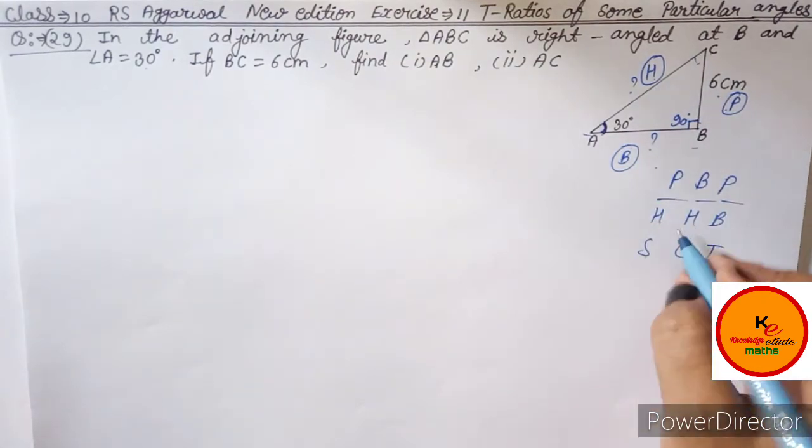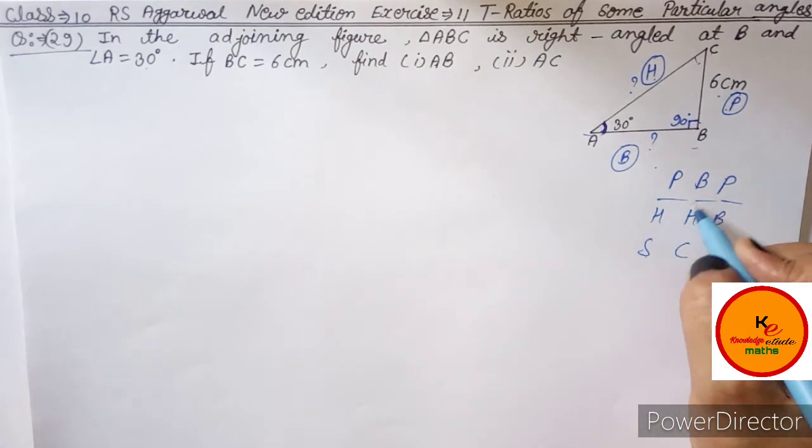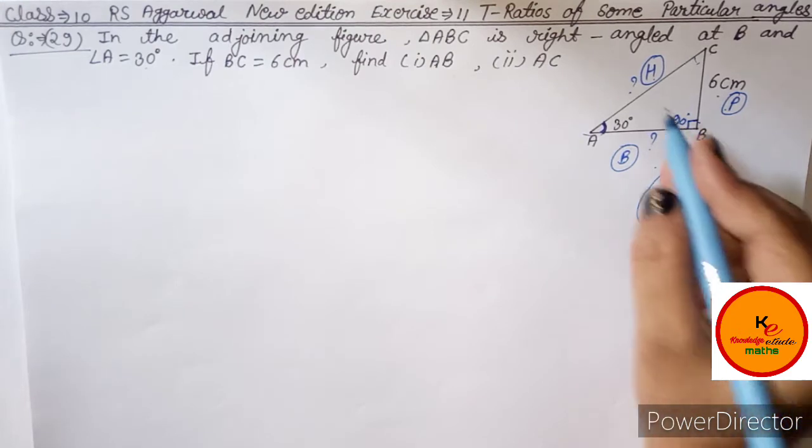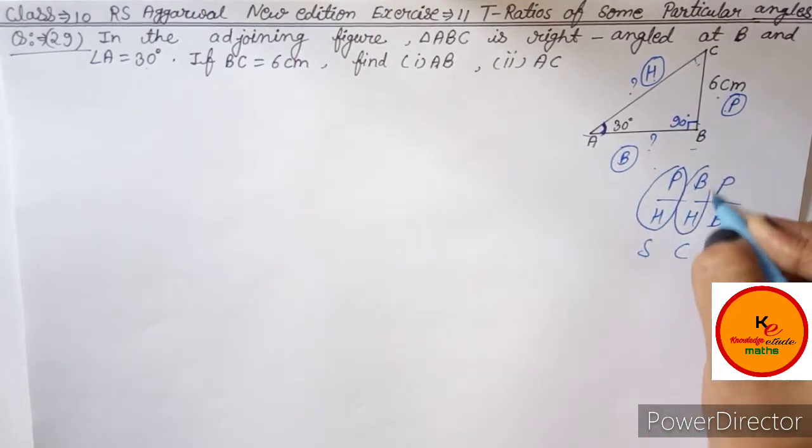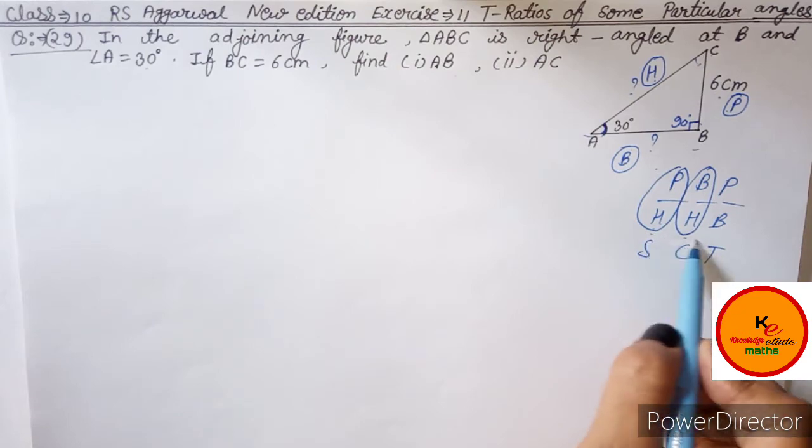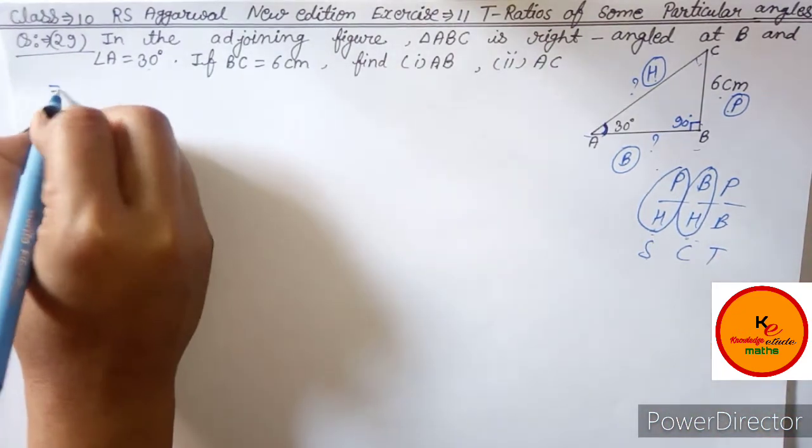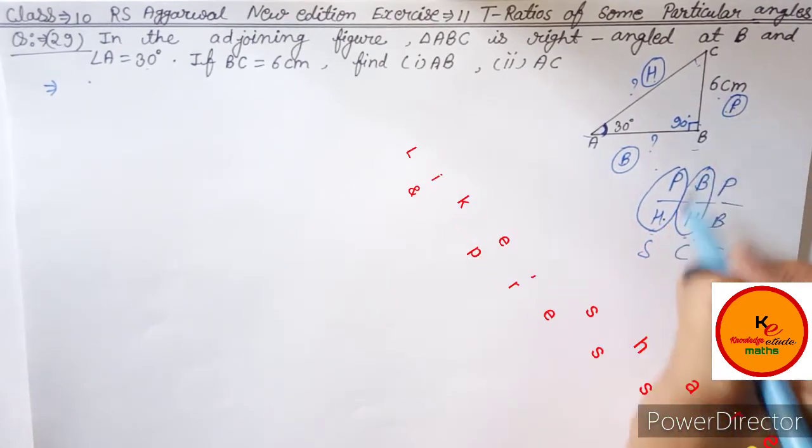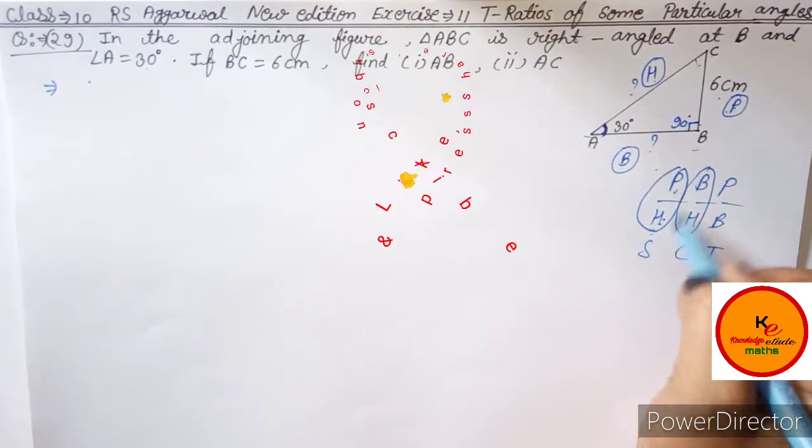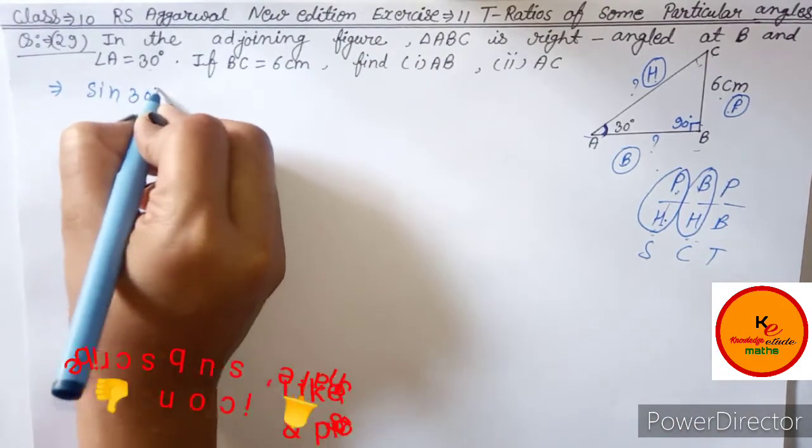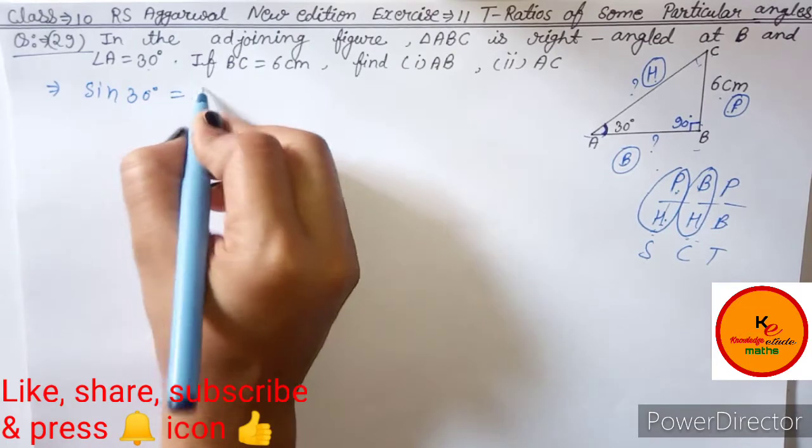Perpendicular is given, hypotenuse you have to find here. So we will solve it by taking sin and cos. Our first part is given here, in which we can do sin 30 degree because 30 is given.